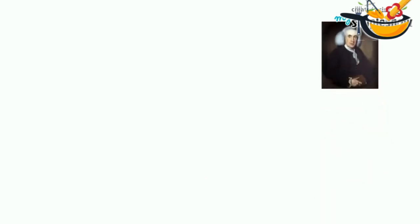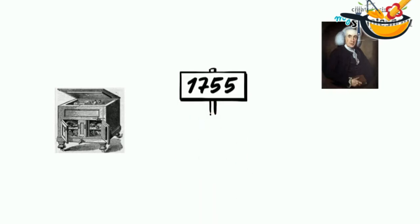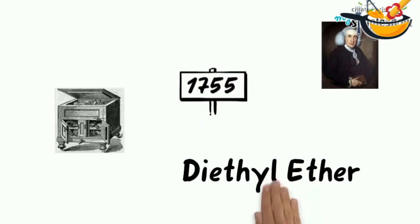William Cullen, the Scottish professor, invented the first refrigeration model in 1755. Cullen used a pump and a container of diethyl ether. Cullen's theory was to reduce the boiling temperature of the diethyl ether which leads to heat absorption. But the machine was not practical.